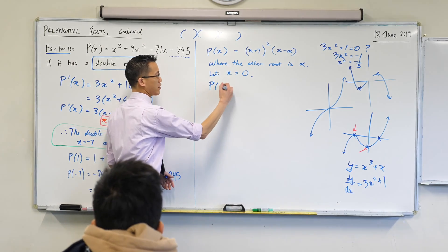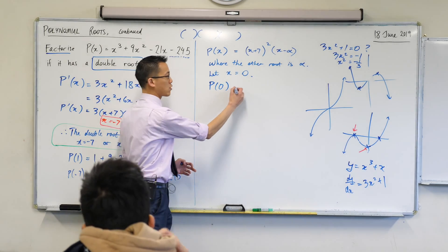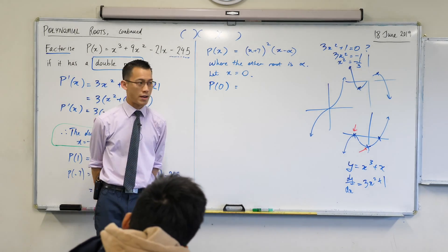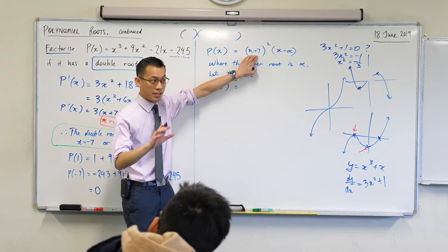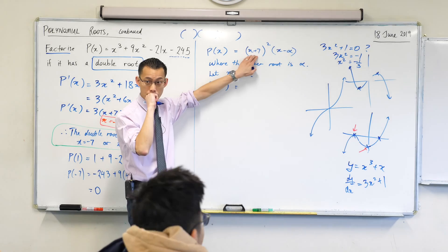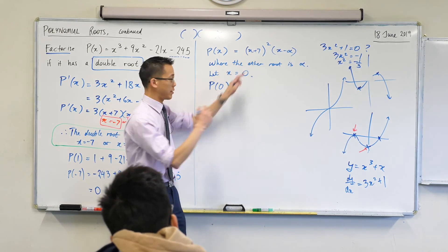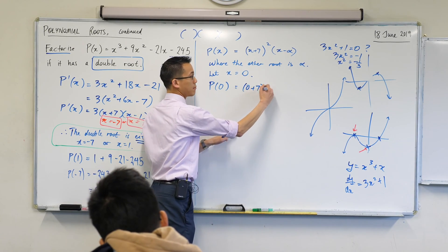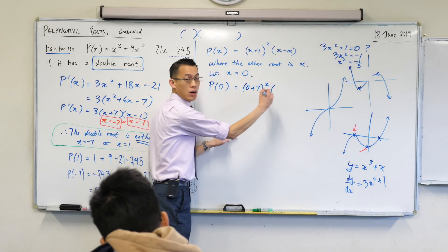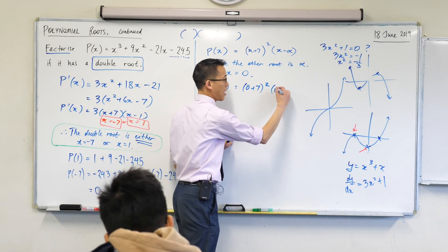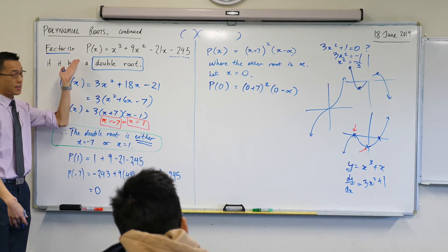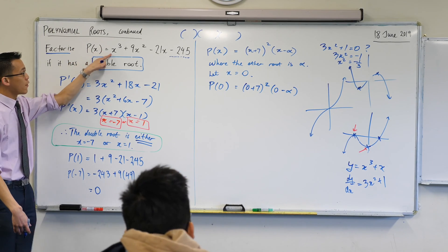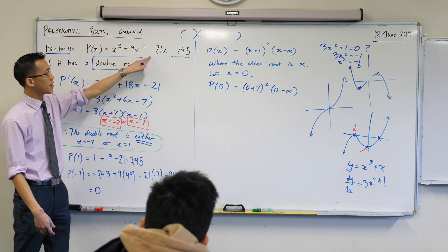I'm going to let x equal zero, so I get P of zero equals what? What's going to start writing on the right-hand side? Have a look. I've got to put zero everywhere I saw x before, right? So I've got zero plus seven. I'm just going to do the substitution step, squared, and then I've got zero minus alpha. Very good. But from the very first line, I know what P of x is, and if I put in P of zero into here, what happens to all of these terms?